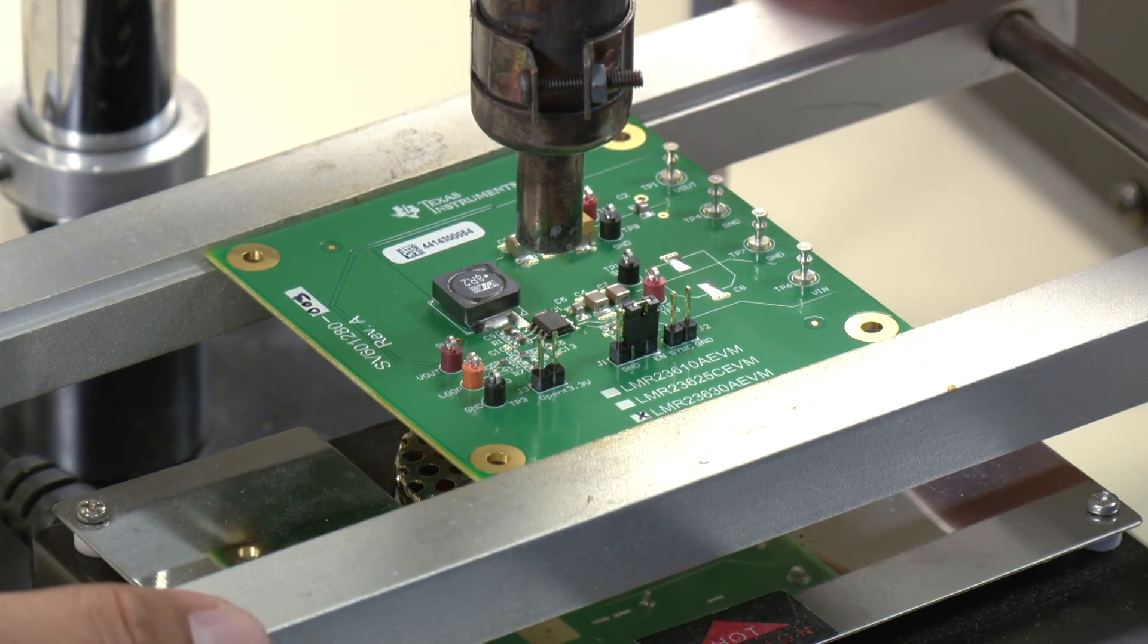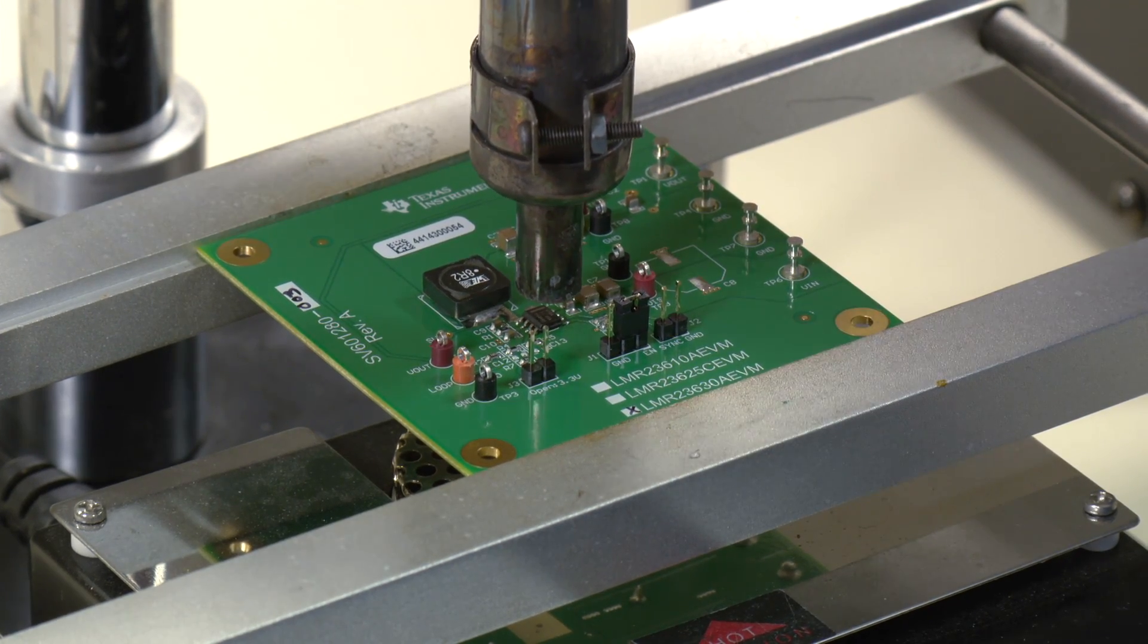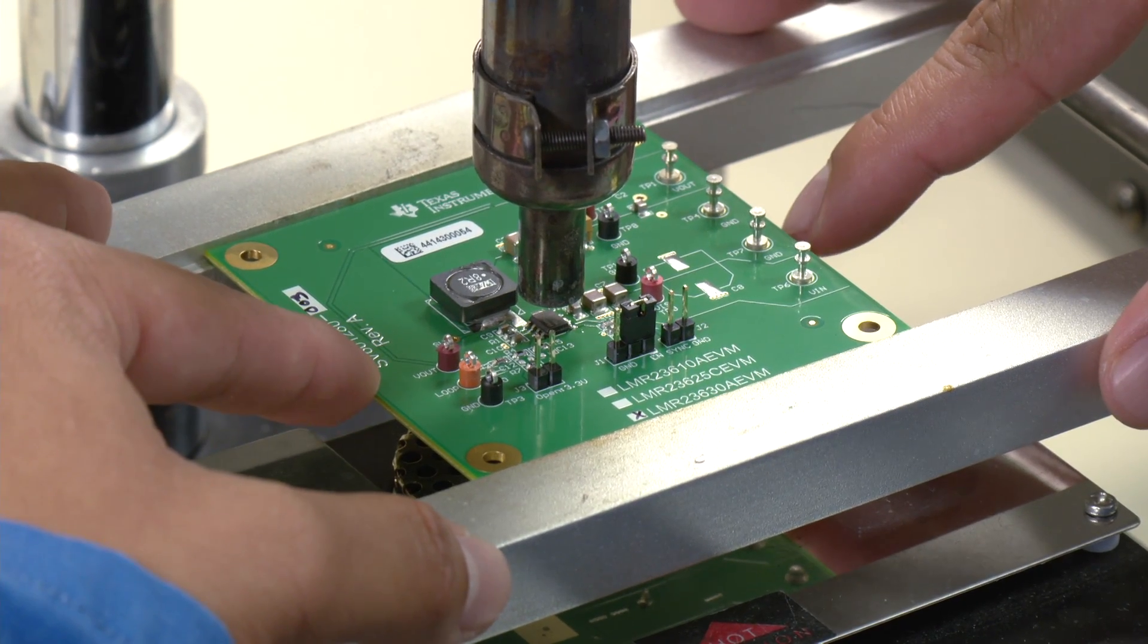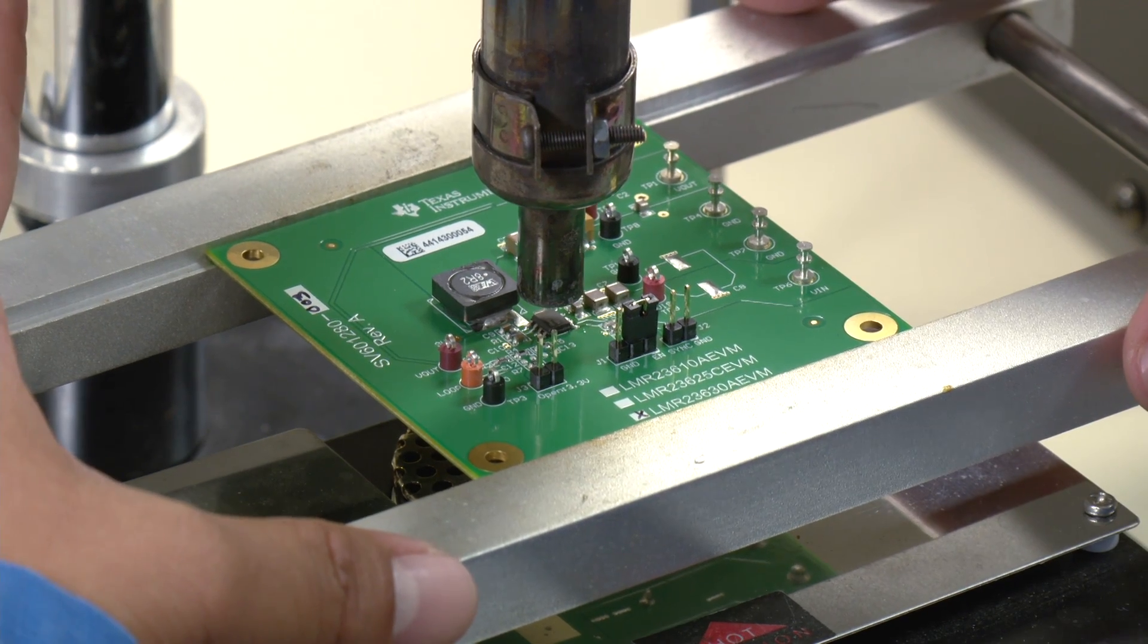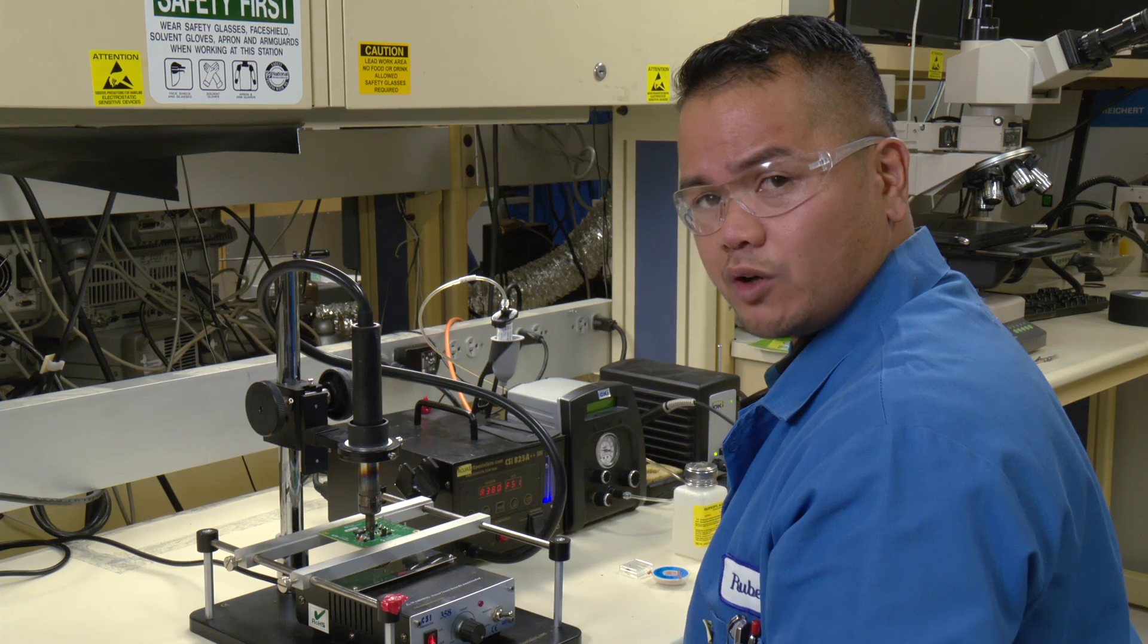I'll move the nozzle down as close to the part as I can. Try to center it. At this point, it usually takes about a minute to a minute and a half for the solder to melt and have the part be removed.